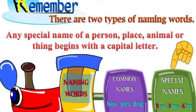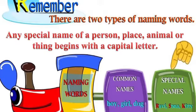Let's remember common names and special names. There are two types of naming words — common names and special names. The names like boy, girl, dog, etc. are examples of common names. Revi, Sona and Kitty are examples of special names. Any special name of a person, place, animal or thing begins with a capital letter. Children, remember this always.